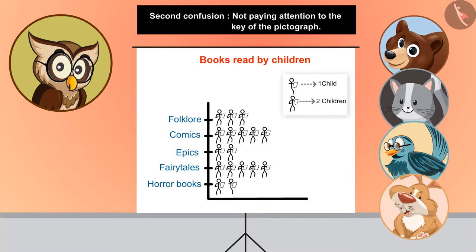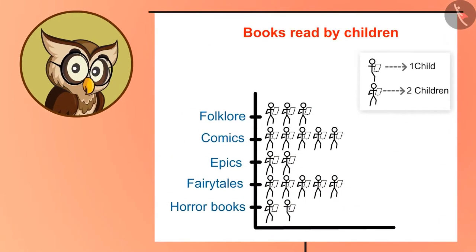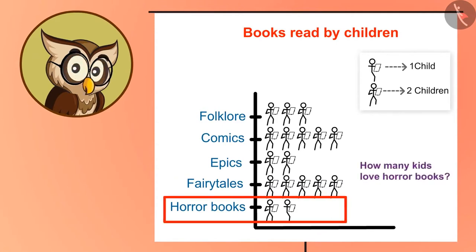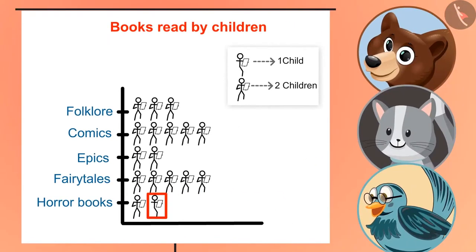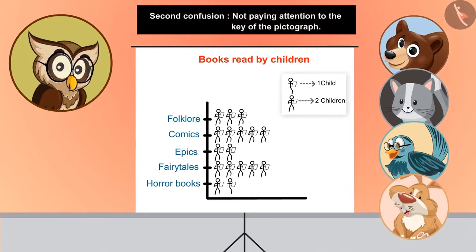So, by making such lists, we can easily show data with fewer pictures in the pictograph. Now, again, take a look at the pictograph. Who will tell me how many kids love horror books? But here, we have only half a stick man. Right. If a whole stick man means 2 children, then half the stick man will mean 1 child. So, how many children love horror books? 3.